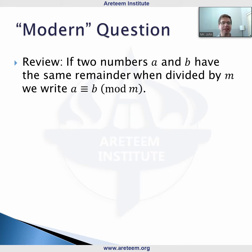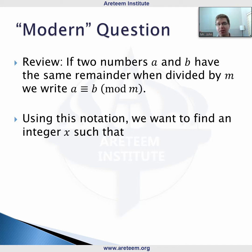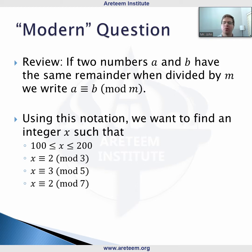We can translate that original question into modern notation. We want to find an integer x such that 100 ≤ x ≤ 200, x ≡ 2 (mod 3), x ≡ 3 (mod 5), and x ≡ 2 (mod 7). This is our modern formulation of this question.